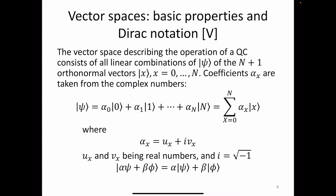The vector space describing the operation of a quantum computer consists of all linear combinations of the n plus 1 orthonormal vectors. We have the vector psi with probability amplitudes alpha sub 0 associated with state 0, alpha sub 1 with state 1, and alpha sub n with the nth state. Summing from 0 gives the combined state.